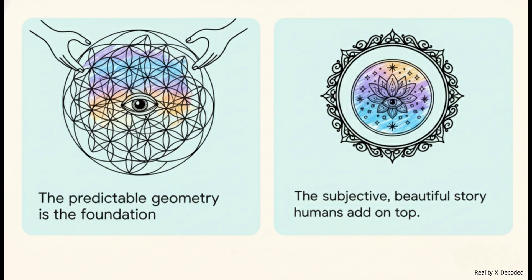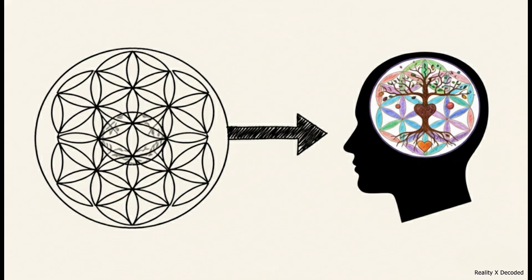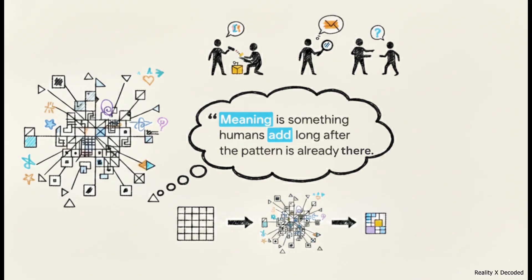The mathematics is the objective reality. It's a predictable geometric outcome. The mysticism, well, that's the beautiful, subjective story that we humans have layered right on top of it. One is a fact of geometry. The other is a fact of human psychology. In the end, the flower of life doesn't really unlock the hidden secrets of existence. What it unlocks is a profound insight into us. It's the perfect case study of our powerful, innate, and deeply human need to take a raw structure and transform it into a meaningful story. The pattern isn't some cosmic blueprint. It's just a beautiful shape that shows up when you follow a simple rule. And it's a powerful reminder that meaning isn't something we discover hidden out there in the world. It's something we create. It's something we add long after the pattern was already there.